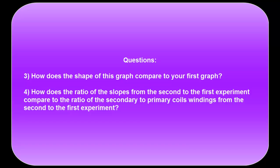Stop this video, plot your graph, and then answer the following questions. How does the shape of this graph compare to the shape of your first graph? How does the ratio of the slopes from the second experiment to the first experiment compare to the ratio of the secondary to primary coil windings from the second to the first experiment?